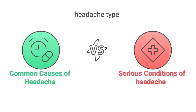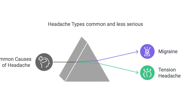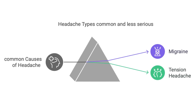We'll start with the common and less serious causes, and then we'll move into the really important serious and potentially fatal causes section. We want you to really be able to tell the difference and when to get help. So let's jump right into that first category, the common and less serious causes.